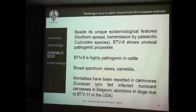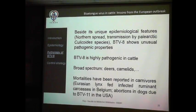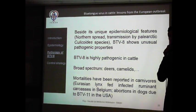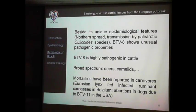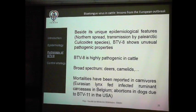Besides its unique epidemiological properties, BTV-8 shows peculiar pathogenicity — it is highly pathogenic in cattle, which is new for BTV. It has an extremely broad host spectrum, detected in deer and various wildlife. Mortalities have also been reported in carnivores including lynx and lynx-like species fed carcasses of infected animals, showing oral transmission was efficient. Cases of abortions in dogs have been related to BTV infection in the USA — this is possible in carnivores as well.